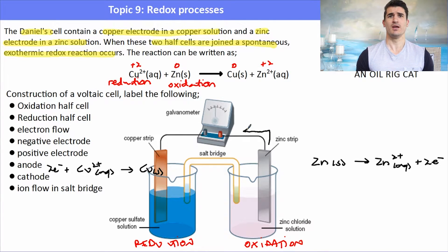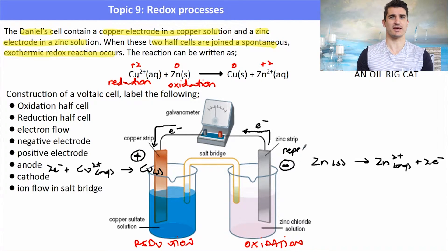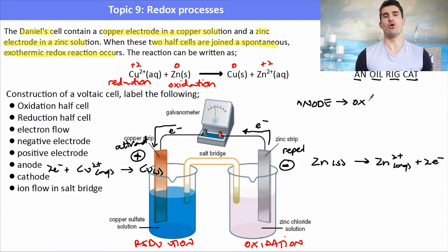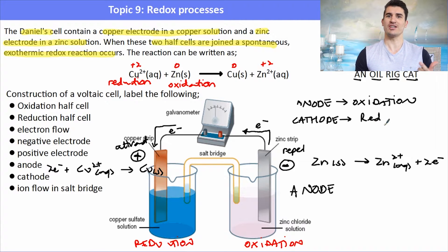Because zinc is undergoing oxidation, electrons flow from the zinc to the copper — zinc loses electrons, copper gains them, so electrons travel from left to right. Electrons are negatively charged, so the zinc electrode repels them; it's the source and is termed the negative terminal. The copper is the positive terminal. Using the saying OIL RIG CAT AN: oxidation occurs at the anode, so the zinc half cell is the anode; reduction occurs at the cathode, so the copper electrode is the cathode.